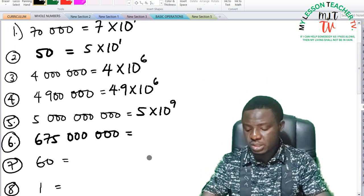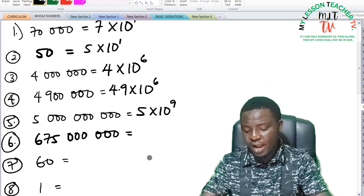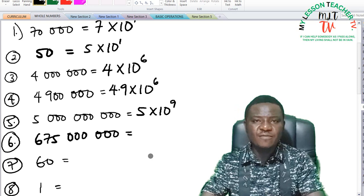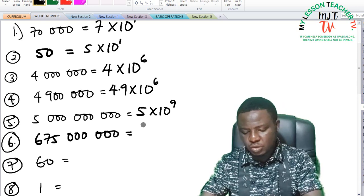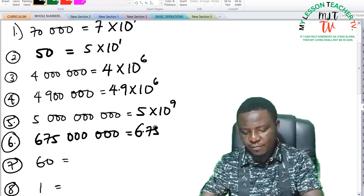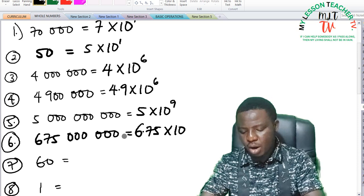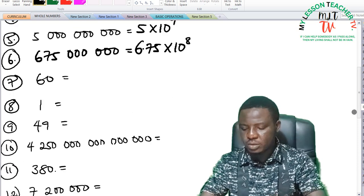Number 6 is 675,000,000. 675,000,000 in standard form is 6.75 times 10 raised to the power of 8.